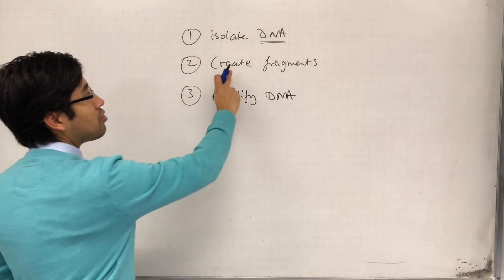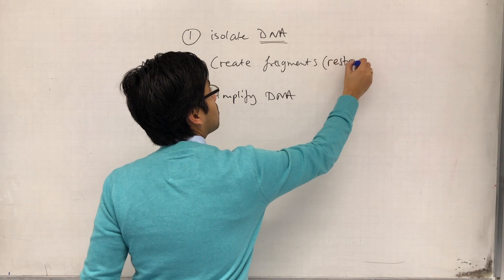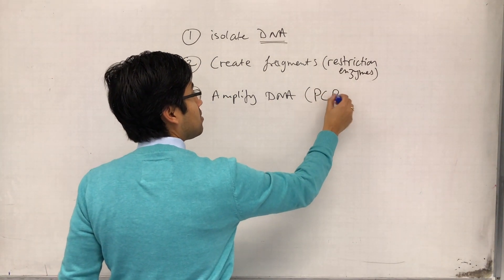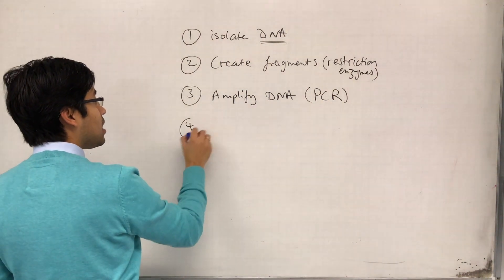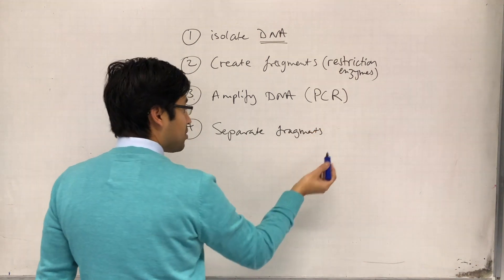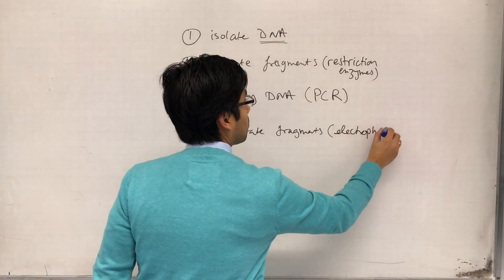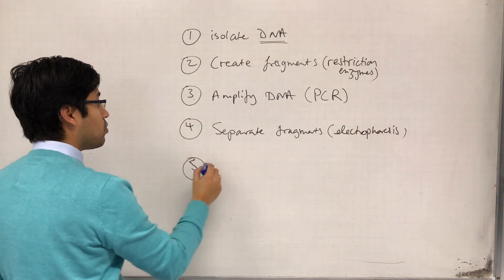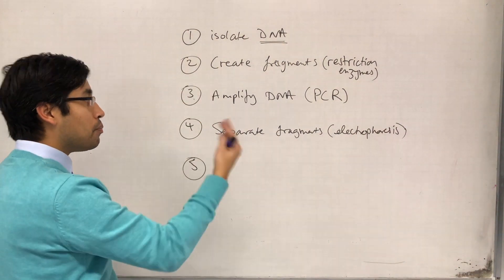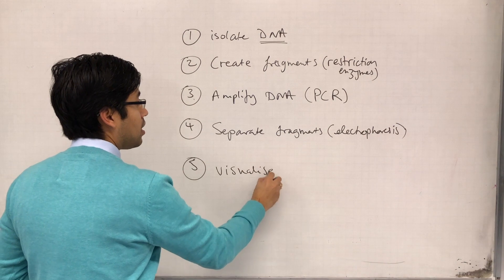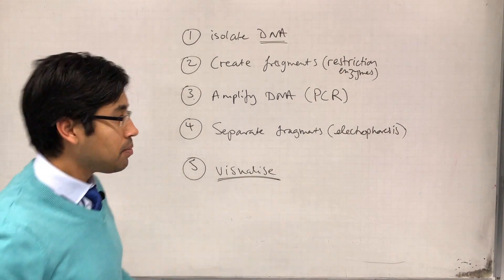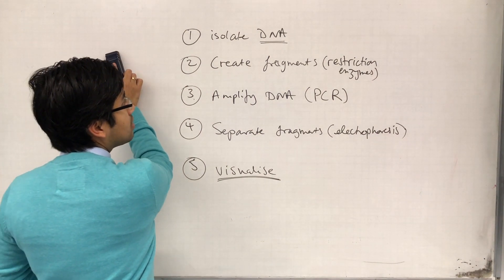Just for your reference, we create the fragments using restriction enzymes and we amplify DNA using the polymerase chain reaction. Once we've amplified the DNA then we separate the fragments based on size, and that is the electrophoresis. Finally, we can't really see the DNA at this point even though we have separated the fragments based on size. Essentially we've created a profile but we can't see it until we visualize the DNA or specific parts of the DNA. So let's begin with isolating DNA.